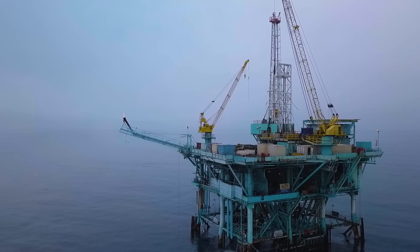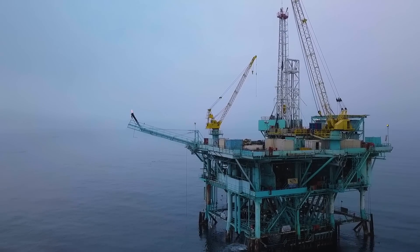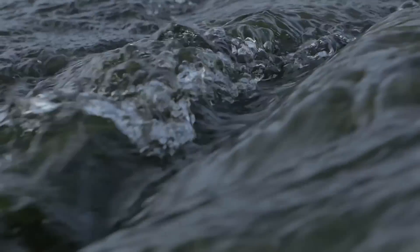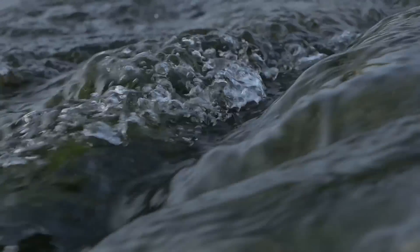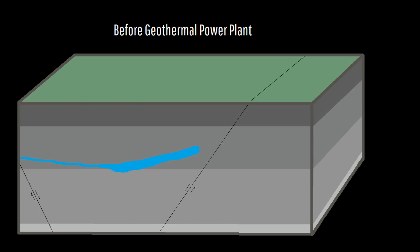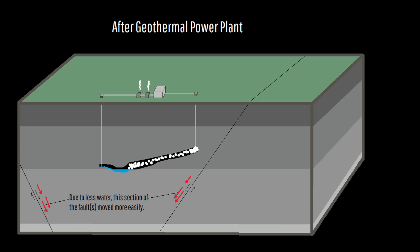As for why this large earthquake occurred, the reasoning is quite similar to how the oil and gas industry can cause earthquakes: wastewater injection. In this case, the wastewater is instead useful water injected into the ground so it flashes to steam before rising again. Since the water is either pumped into an area which previously did not have as much water, or is drained beyond what used to exist there, this process can cause stress changes at regional fault lines. As a result, pressure builds up over time before finally being released as an earthquake.